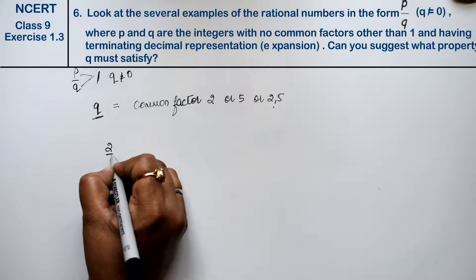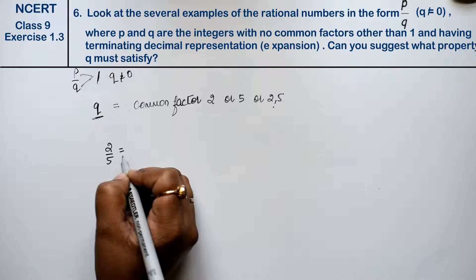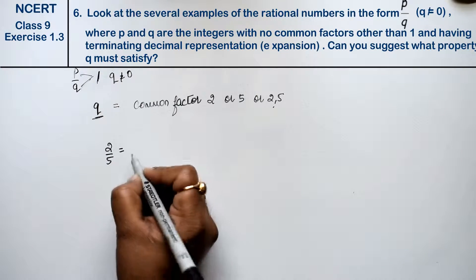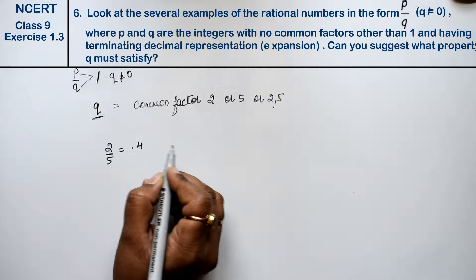Like 2 upon 5. If I divide it from this, it will be 0.4. It will be terminating.